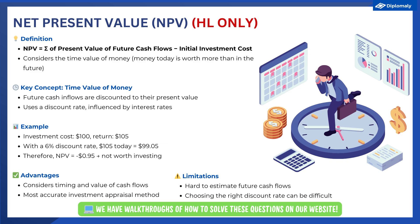As a simple example, if we had an investment costing $100 and we would earn $105 next year, we might immediately think we should take that investment since the returns are positive. However, the NPV makes us consider the time value of money. If our discount rate was 6% — perhaps because our firm could earn almost that amount by leaving money in the bank — the $105 would actually only be worth $99.05 to us today, and therefore we should not take this investment.